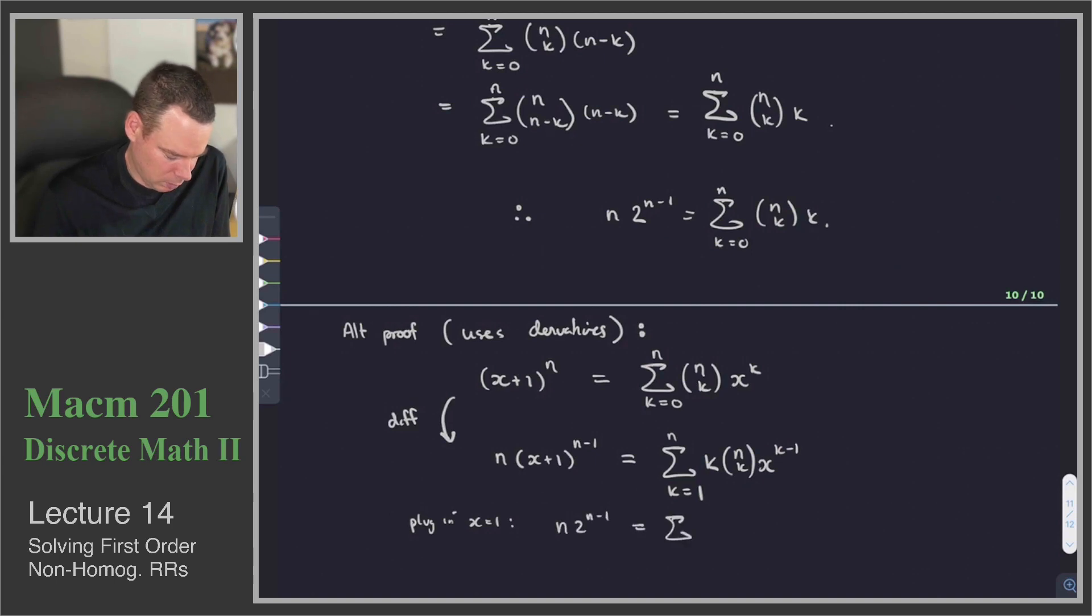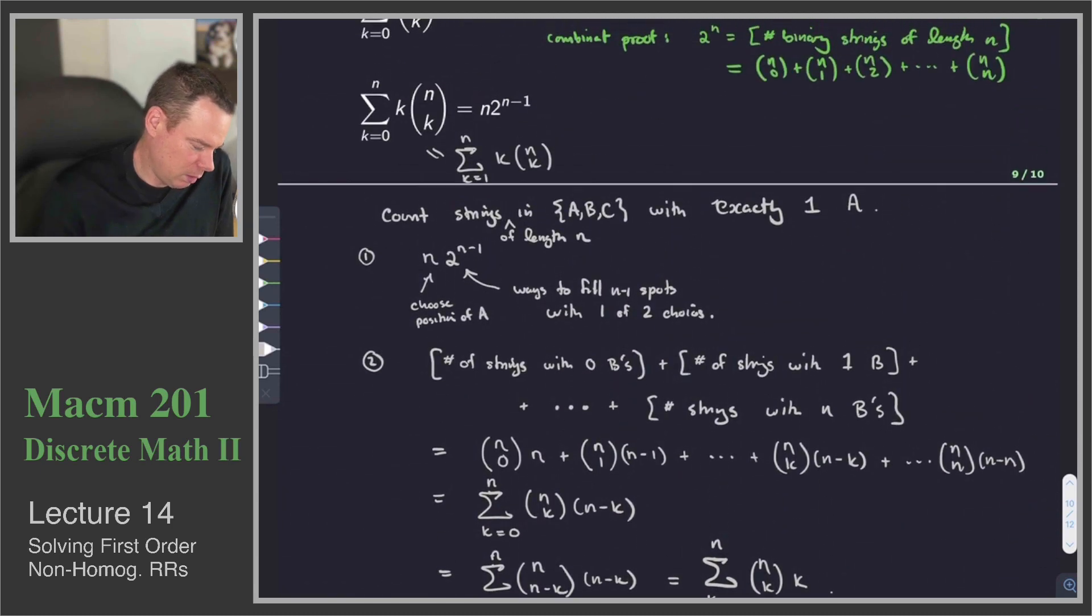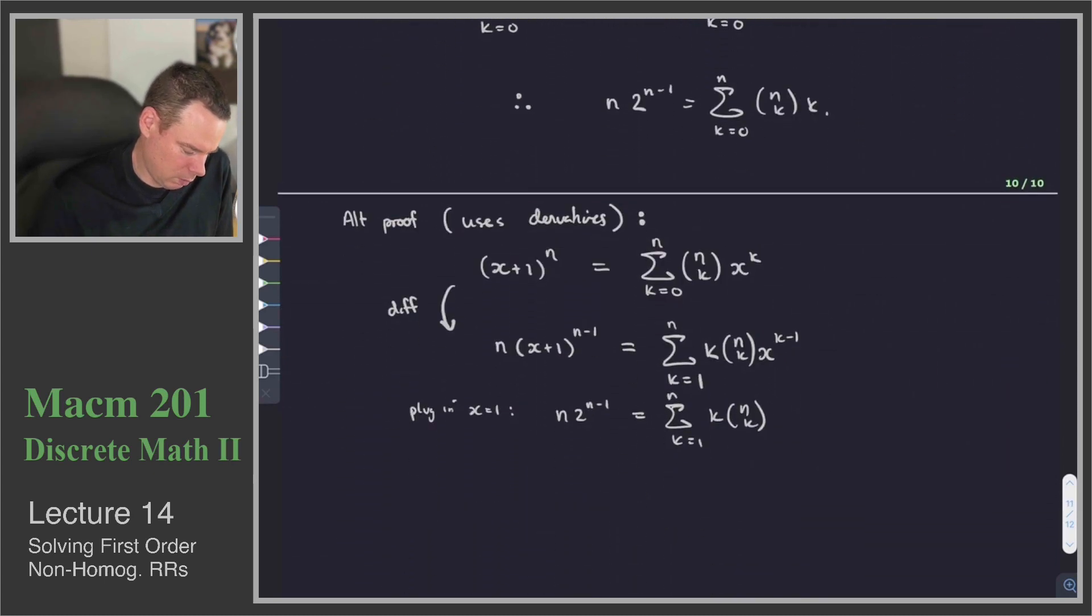And so now, what do we do? Now we plug in x equals 1. And we get n, 2 to the n minus 1, is equal to the sum of k equals 1 to n of k, n choose k. And based on the remarks I had above, I said originally our sum started at 0, but the first term was just 0 anyway, so it's equivalent to starting at 1. And that's what we found down here. So there we go. We've got our solution in a different way. So the first one used a combinatorial proof, the second one used derivatives.